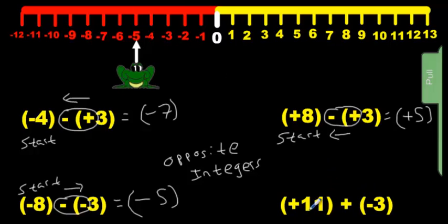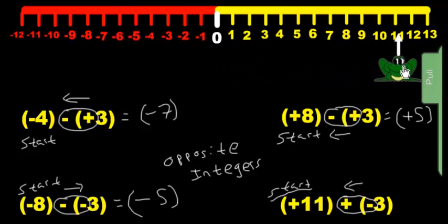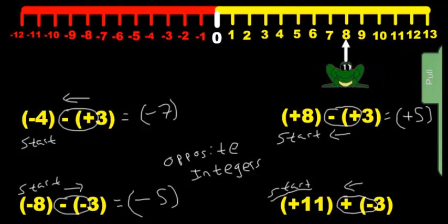Then we have this one here. We have a start at positive 11 — excuse my chicken scratch writing. We look at these two signs here — they're different — so we go to the left. We're going to put frogman at 11 and go to the left three times because they're different signs. Our answer is positive 8. Put it in brackets because these two are in brackets.